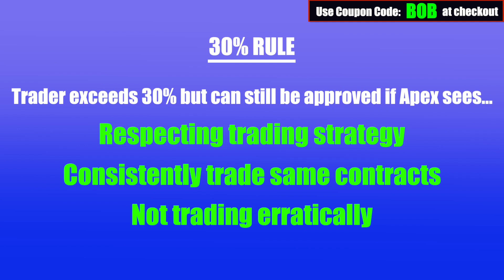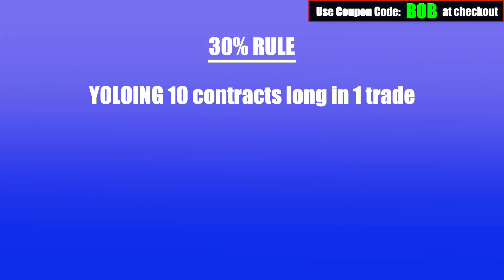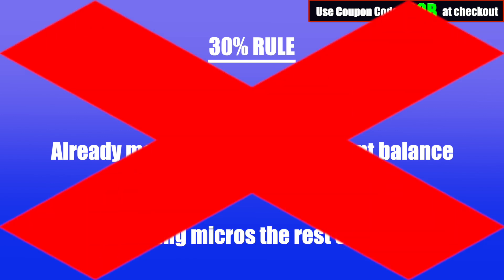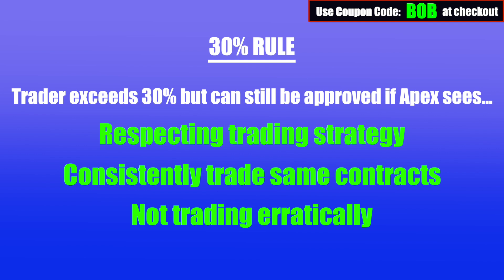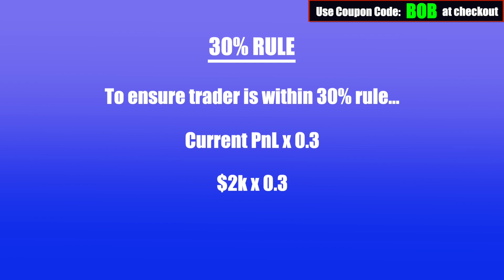The rule is designed to keep irrational traders from receiving a payout. Apex wants to prevent traders from buying a large number of contracts in one trade to already fulfill the minimum account balance requirement in one day and then trading micros for the rest to meet the 10-day rule. So as long as you're trading consistently, you have nothing to worry about. If you really want to ensure you remain below 30%, simply take your current P&L, multiply it by 0.3, and make sure your best trading day does not exceed that number. For example, if your current P&L is $2,000: 2,000 times 0.3 equals $600, so keep your best trading day below $600.